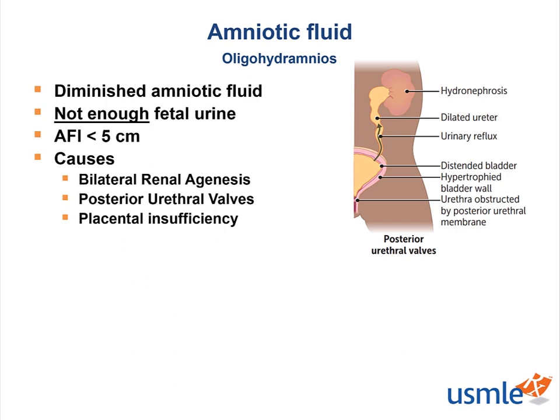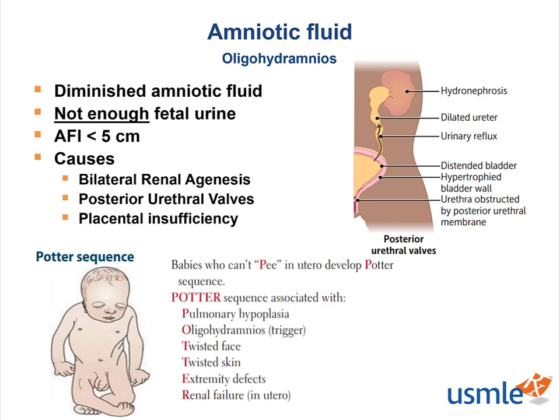Having too little fluid in the amniotic sac can lead to Potter sequence, which, if you recall from your renal chapter, presents with pulmonary hypoplasia, clubbed feet, flattened facies, and other anomalies as a result of the fetus being compressed from lack of a fluid cushion.